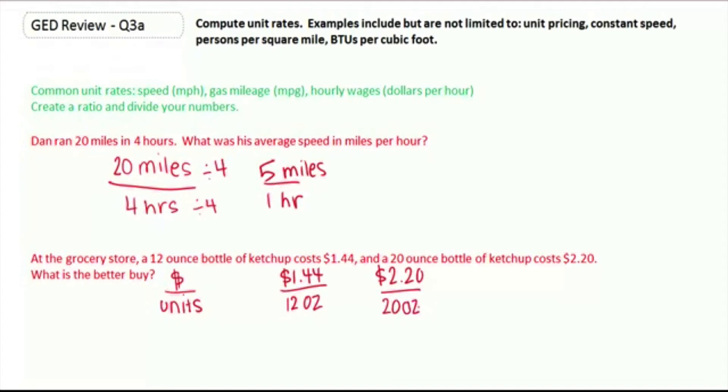Now we need to divide. $1.44 divided by 12. 12 doesn't go into 1. 12 goes into 14 once, which would be 12. Get a remainder of 2 and bring down your 4. 12 goes into 24 twice evenly. So the 12-ounce bottle of ketchup costs 12 cents per ounce.